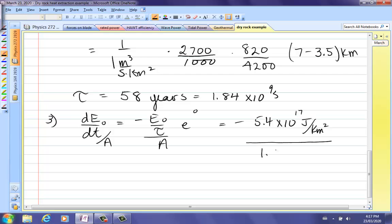So that goes here, to the 9 seconds. And then this is going to give us watts. And so initially, we're extracting at a rate of 290 megawatts. That's pretty good. Per square kilometer. So that's rate of heat extraction.